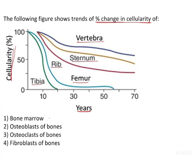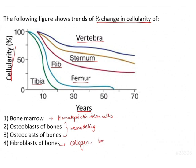This change in cellularity is seen in which portion of these bones? The options given are: bone marrow, osteoblast of bones, osteoclast of bones, and fibroblast of the bones. Bone marrow lodges the hematopoietic stem cells for production of blood cells. Osteoblast and osteoclast have a role in remodeling of the bone, and fibroblast has a role in collagen deposition, which forms the bone matrix.